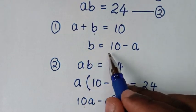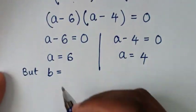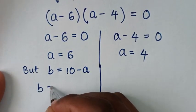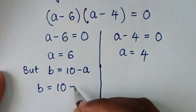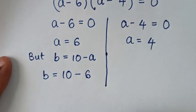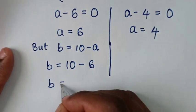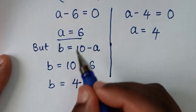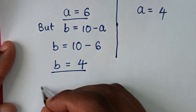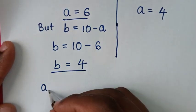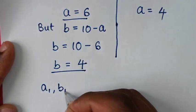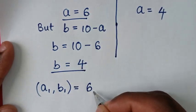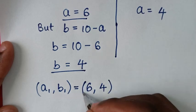Before finding b, we recall that b is equal to 10 minus a. So to find the value of b for the first solution, it will be b is equal to 10 minus 6, which is 4. So from the first solution, A1 comma B1 is equal to 6 comma 4. This is the first solution.